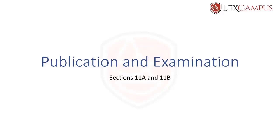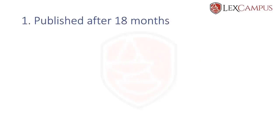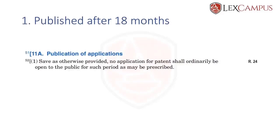There are a few things to remember when it comes to 11A and 11B. First, an application is published after 18 months — this is the default rule. We get that from 11A(1): no application for a patent shall ordinarily be open to the public for such period as may be prescribed, meaning it is open to the public after the prescribed period. The prescribed period is 18 months, as stated in Rule 24.